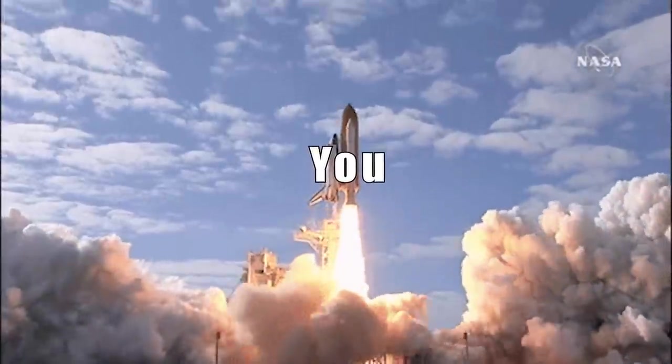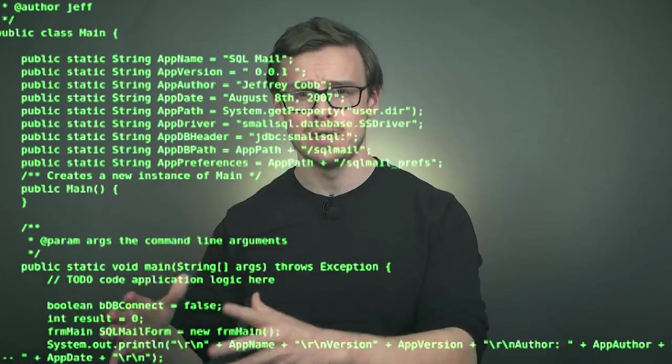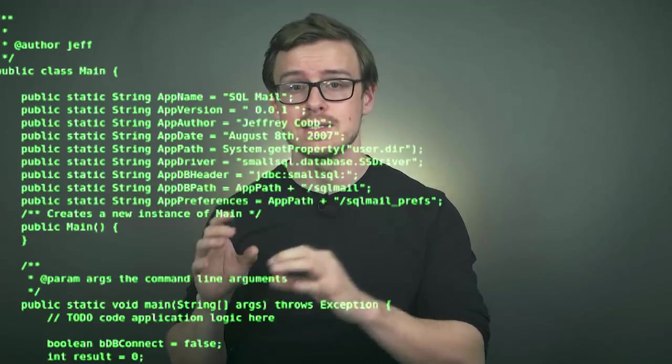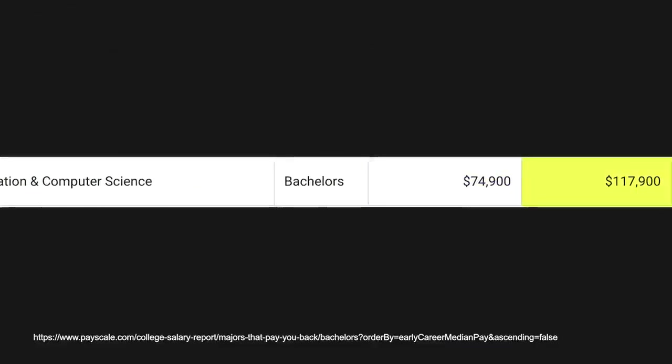The first one on the list is going to be a degree that will skyrocket you to success. Number 10 on the list is information and computer science. This is basically a combination of computer science and information science. You're going to get a lot of the coding and software development from computer science, and combine that with statistics and mathematics from data science or information science. With this degree, you're going to start off in your first five years making nearly $75,000 a year, and mid-career pay is going to be $117,000.